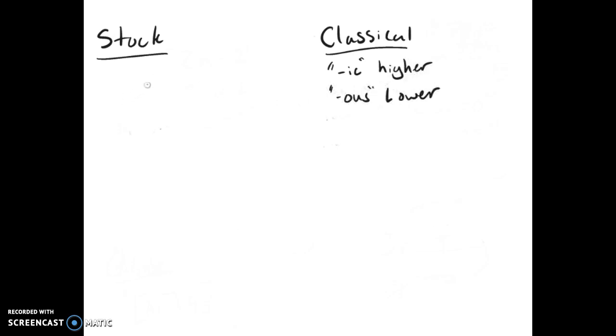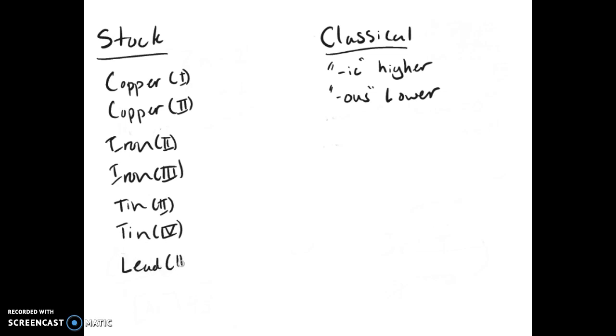So in the stock system, to give you a couple examples of the ones you have to memorize: copper 1, copper 2, iron 2, iron 3, tin 2, tin 4, and then lead 2 and lead 4.